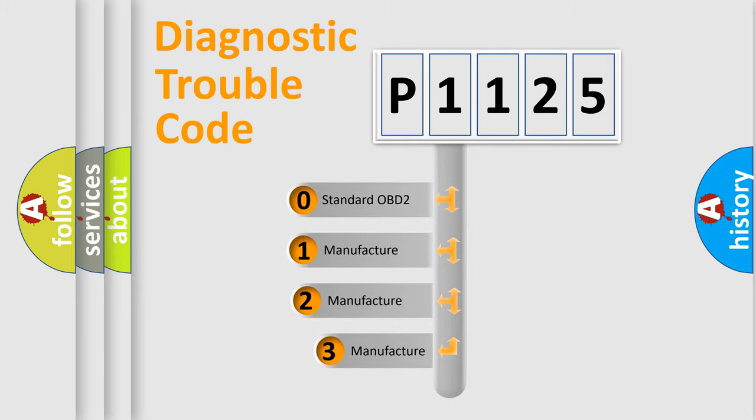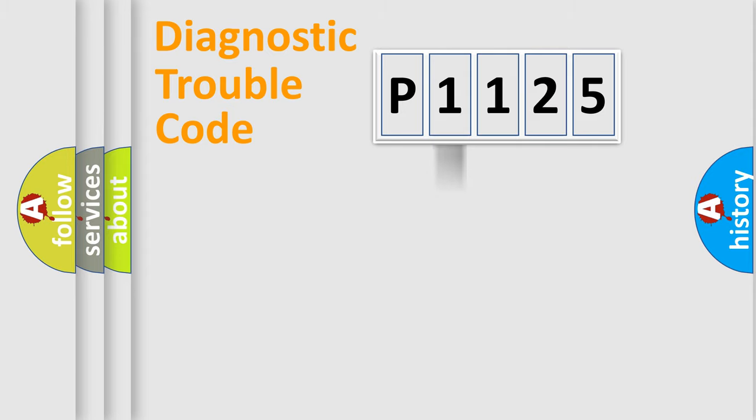If the second character is expressed as zero, it is a standardized error. In the case of numbers 1, 2, or 3, it is a manufacturer-specific expression of the car-specific error.